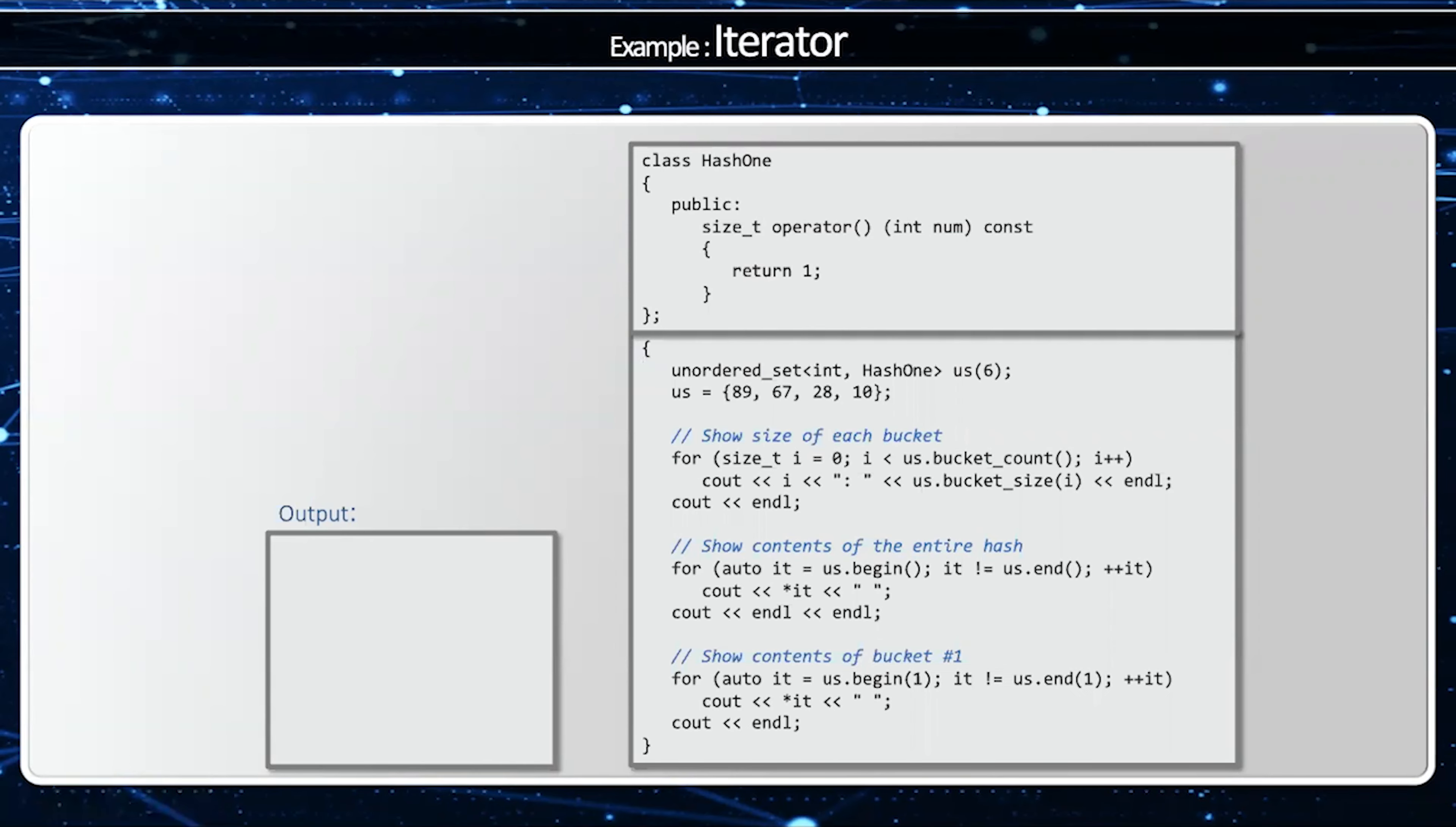To demonstrate this I'll have a hash function that always returns one. So no matter what value I pass into my hash function I'll always put things in the one bucket. So we'll start with an unordered set that has six elements and uses hash one and this will give me six empty buckets.